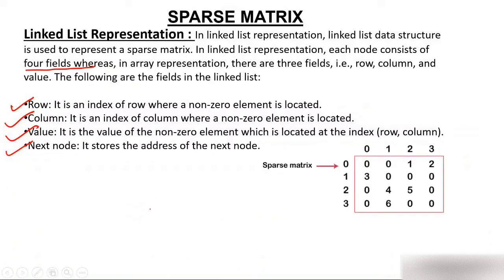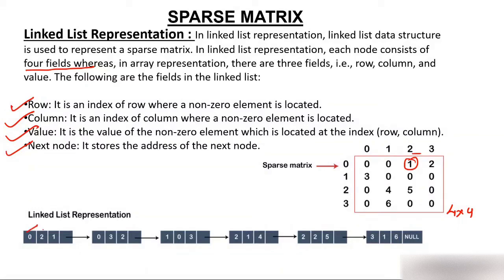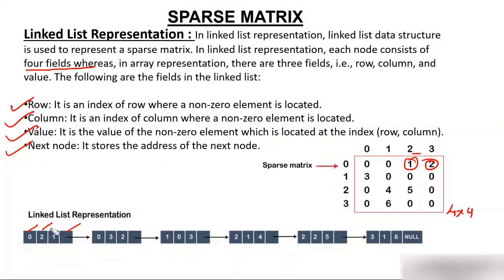Looking at the diagram, we have a four cross four sparse matrix. At row zero, column two, the element is one — so we store row zero, column two, value one, and keep the address of the next node. At row zero, column three, the value is two — we store that with the address of the next node. This is how we store a sparse matrix using linked list representation.